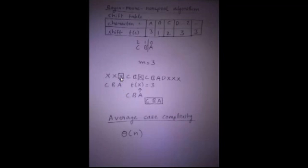In this case, the character is X and the entry for that is 3 in the shift table. So we shift the pattern by 3 times and we start comparing again.